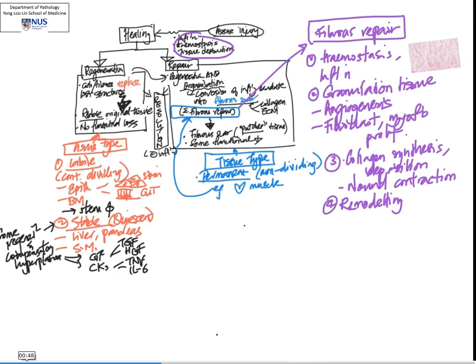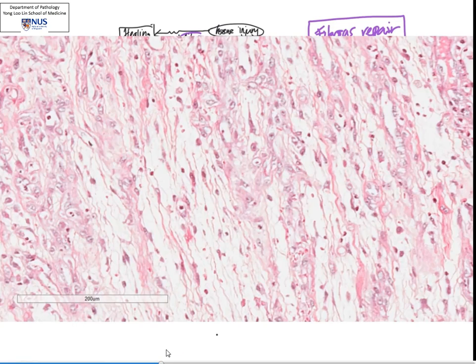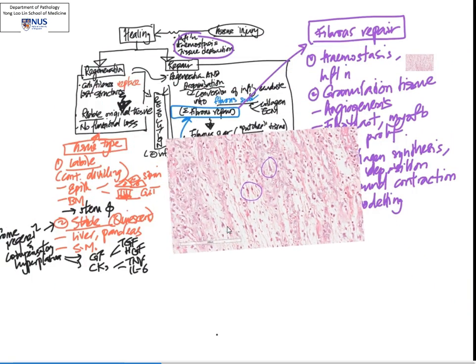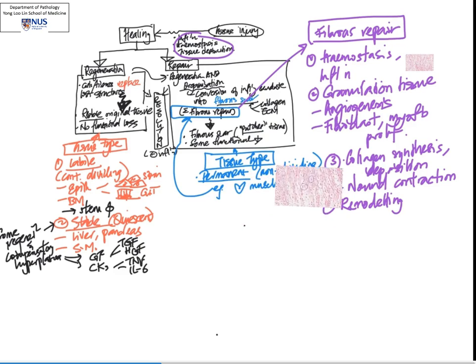That is granulation tissue. As mentioned, in higher power you can see that between these vascular structures we can actually see some cells like these. These spindle cells have central nuclei and very long feelers that are sent out in the cytoplasm. These are myofibroblasts or fibroblasts, and the fibroblasts will eventually lay down the collagen, while myofibroblasts will help in wound contraction.